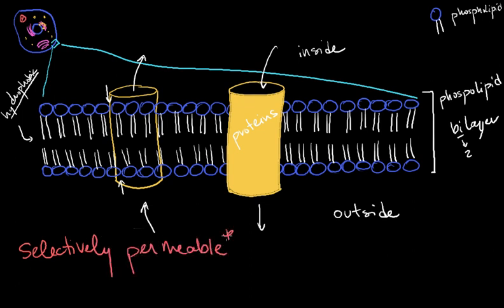Vocab word that you should know. Permeable means to penetrate or to get in and out. So some things get in and out. Sometimes it's called a semi-permeable membrane.